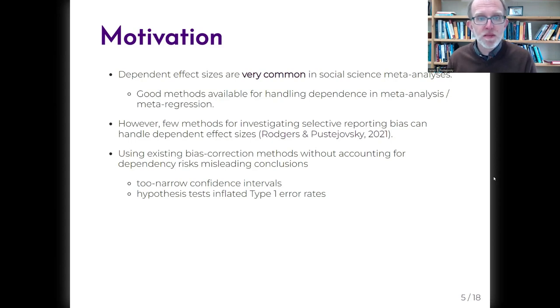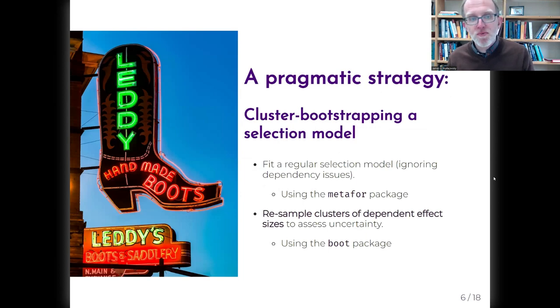Although we have good methods available for handling this sort of dependency when conducting summary meta-analyses or meta-regressions, there are very few methods available for investigating selective reporting that can accommodate dependent effect sizes. And what's more, if you use existing tools that don't account for dependency, you can get misleading results like too narrow confidence intervals and hypothesis tests that have inflated type 1 error rates. So we want to explore a rough-and-ready, pragmatic strategy for investigating selective reporting while also dealing with dependent effect sizes. Our thought is to fit a regular selection model as implemented in the metafor package, and then use a cluster-level bootstrap to account for the dependency.